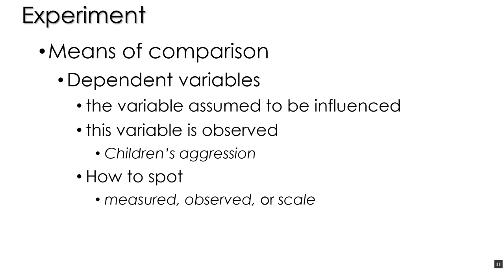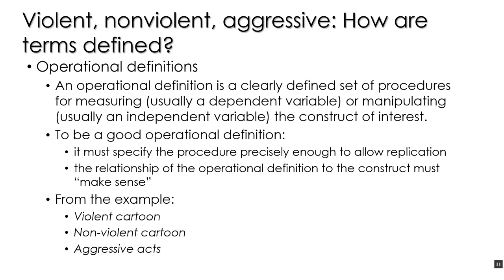The dependent variable is observed or measured, or we get a score from a test given to our subjects. In our example, we're observing the children's level of aggression and measuring it systematically. If you have a difficult time identifying a dependent variable in an experiment, one easy way to spot it is to look for the terms 'measured,' 'observed,' or 'scale,' as authors typically use those words when describing the dependent variable.